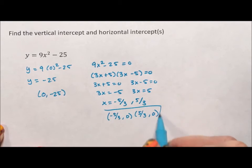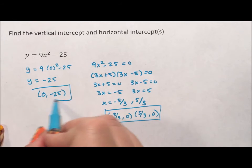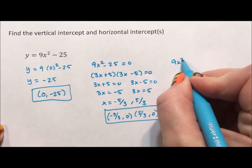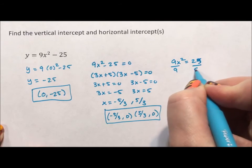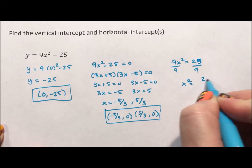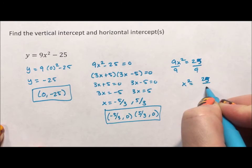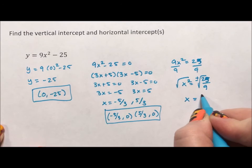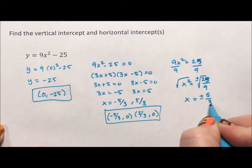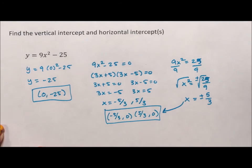On a side note, we could have done this one differently. We could have isolated and said 9x squared equals 25. Divide by 9, x squared equals 25 ninths. Square root with a plus or minus, so x equals plus or minus 5 thirds, which would lead us right back there.